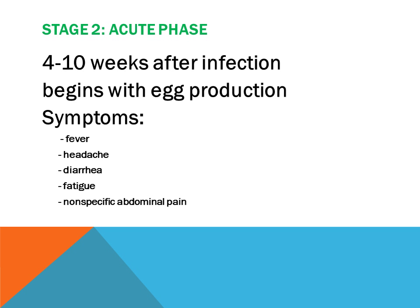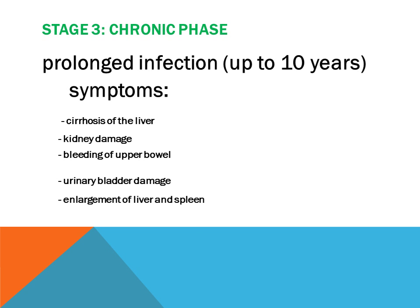Stage 2, four to ten weeks after infection, begins with egg production. Symptoms include fever, headache, diarrhea, fatigue, and abdominal pain. Then Stage 3, which is the chronic stage, with prolonged infection up to ten years. Symptoms include cirrhosis of the liver, kidney damage, urinary bladder damage, and enlargement of the liver and spleen.